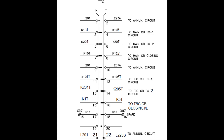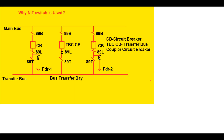For the Inter-Transfer position there are again four contacts: 11, 12, 13, 14, 15, 16, 17, 18. Contacts 11 and 12 are taken for the TBC CB TC1 circuit for Inter-Transfer position. Contacts 13 and 14 are taken for the TBC CB TC2 circuit, and 15 and 16 are taken for the TBC CB closing interlock circuit. Contacts 17 and 18 are spare contacts. Contacts 19 and 20 are only for Inter position and are not taken for any use. Contacts 21 and 22 are taken for the annunciation circuit — the contact for Transfer position.